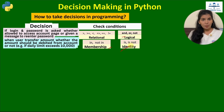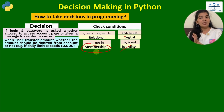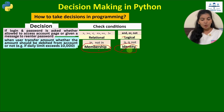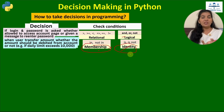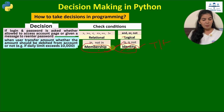We will understand membership operators later when we study collection data types. Membership operators are used to check whether a specified object is present in a given object or not. Identity operators are used to check whether the ID — meaning the memory address — of two objects is the same or not. Both of these operators give a result in true or false.